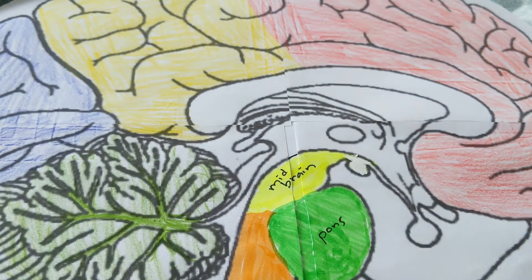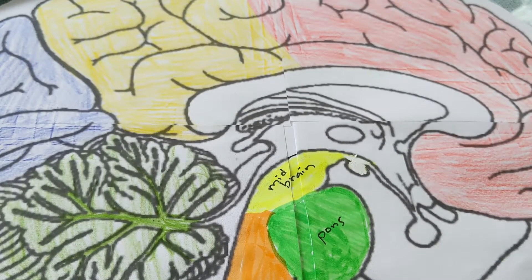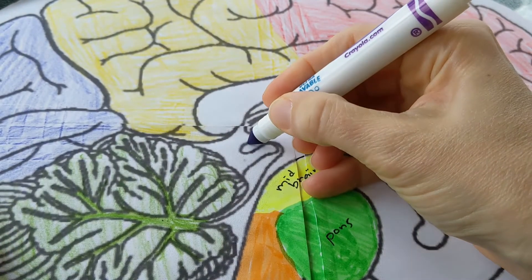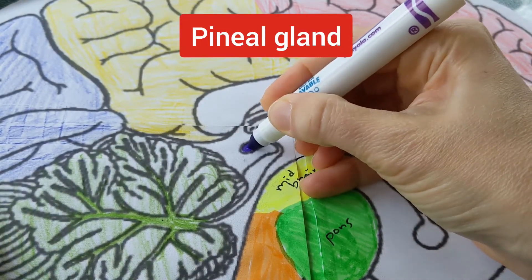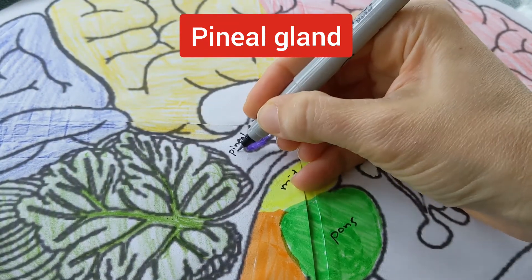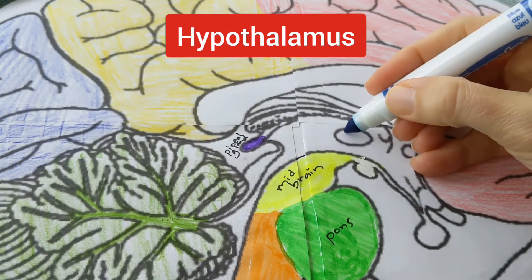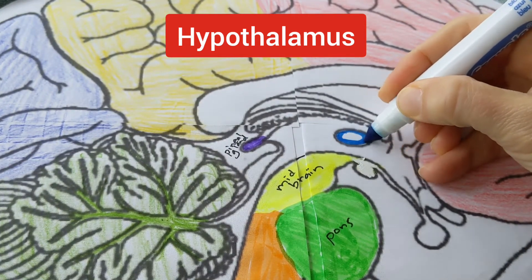Now we're going to get to the limbic system. I will be honest that I find it incredibly difficult to differentiate between the limbic system structures, so this is the best I can do after looking at many different diagrams. I'm going to switch to using markers. The first structure is the pineal gland, which is right here. The next structure is the hypothalamus, and I believe that this is the hypothalamus.